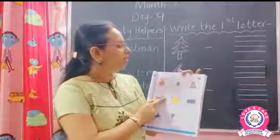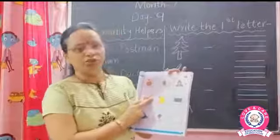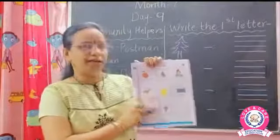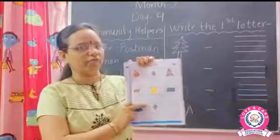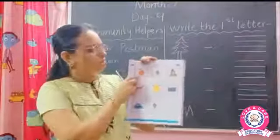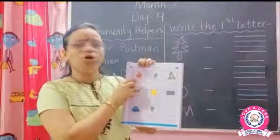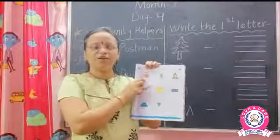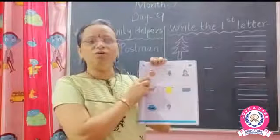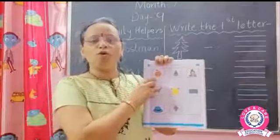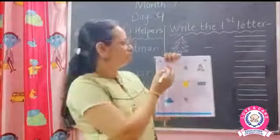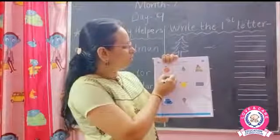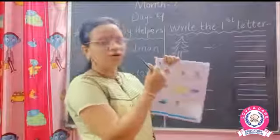Write the alphabets for the given picture — means write the first letter. So which picture is this? Orange. So the first letter is O. O for orange. Write there.